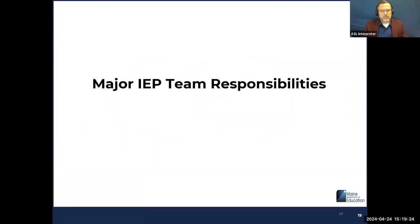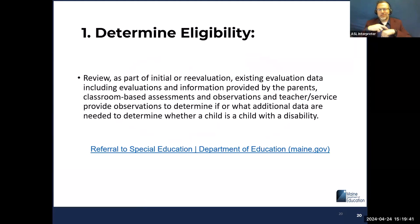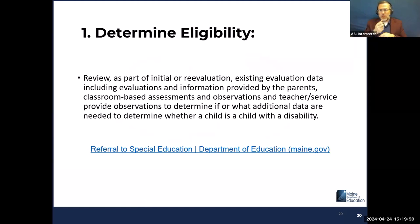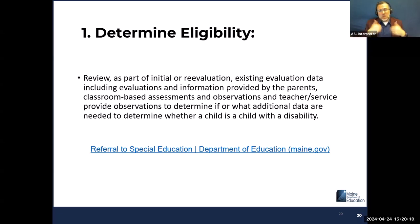The major IEP team responsibilities — there are five, according to MUSER. Number one: determining eligibility. That's the eligibility for special education — reviewing, as part of the initial or re-evaluation triennial meeting, any existing evaluation data, including evaluations and information provided by the parent, classroom-based assessments and observations, and teacher and service provider observations, to determine if additional data are needed to determine whether a child is a child with a disability.